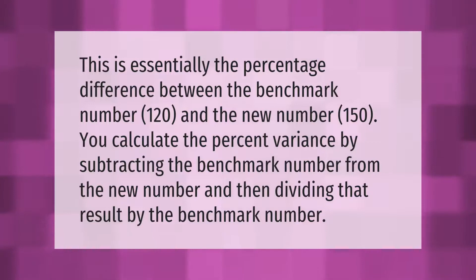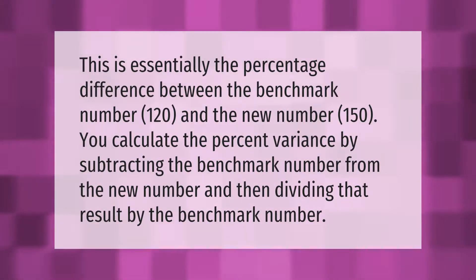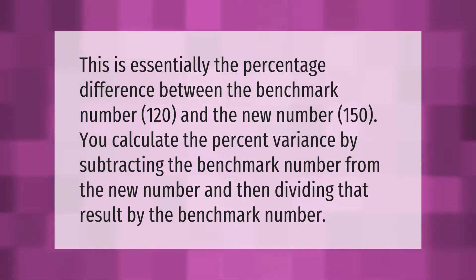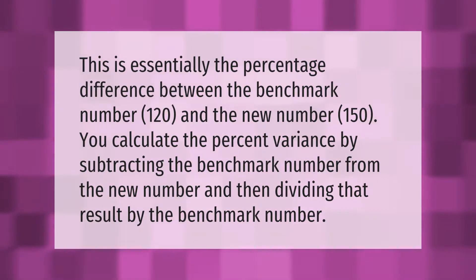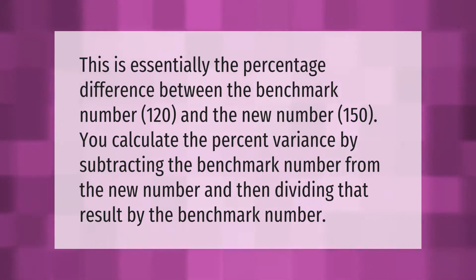This is essentially the percentage difference between the benchmark number 120 and the new number 150. You calculate the percent variance by subtracting the benchmark number from the new number and then dividing that result by the benchmark number.